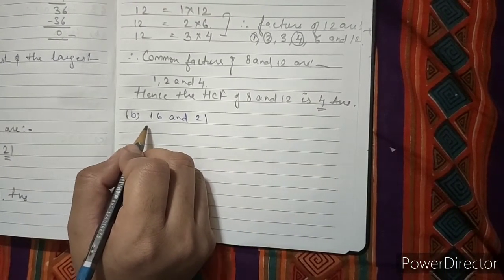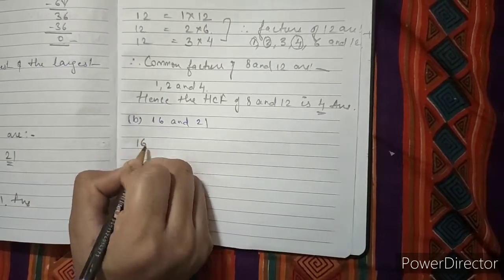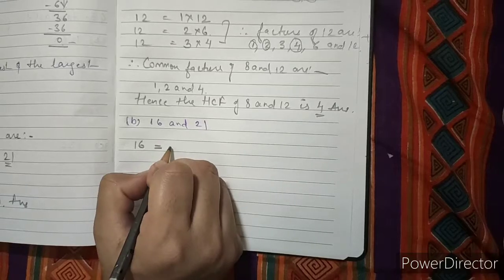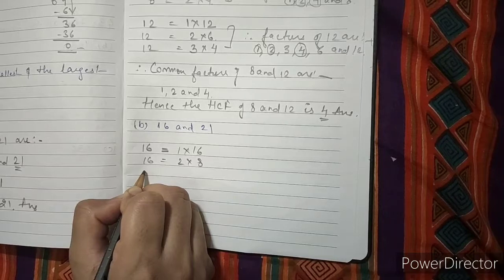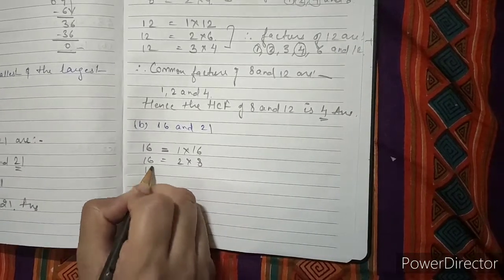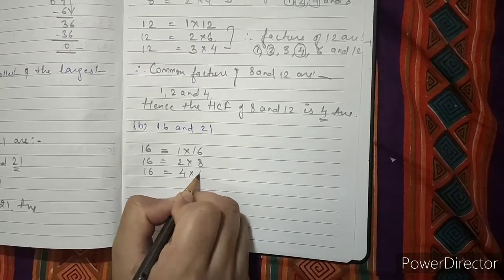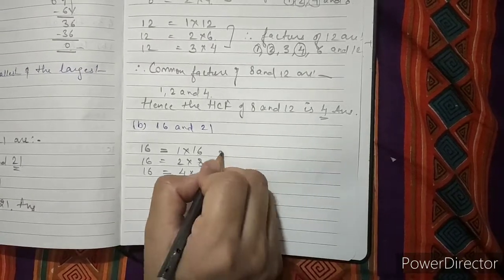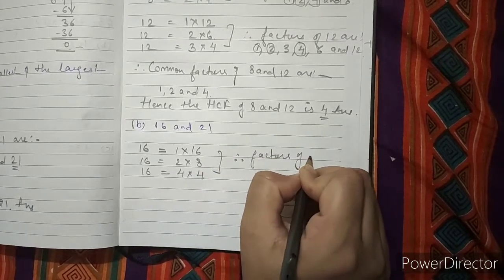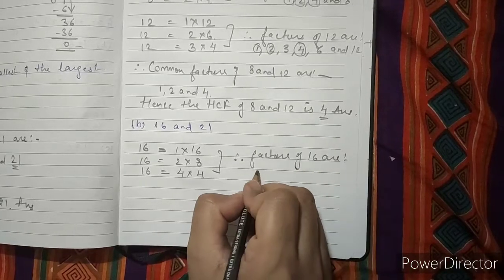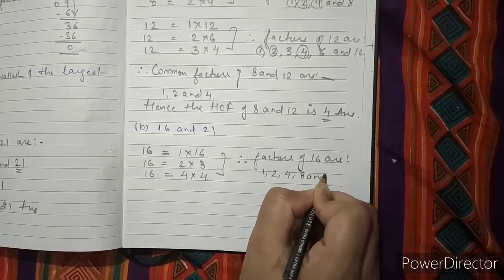Question number 13 B: Find the HCF of 16 and 21. First we find factors of 16: 1 multiply by 16, 2 eights are 16. 16 is not divisible by 3, so we write 4: 4 fours are 16. So all the factors of 16 are 1, 2, 4, 8 and 16.